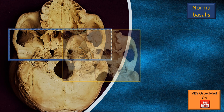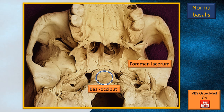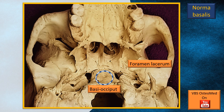Let's expand that view to get more clarity and identify more details. In this view, right at the middle, the dotted blue-white circle is the basi-occiput — the junction of the body of the sphenoid and the occipital bone, the basilar part of the occipital bone. We generally call it the basi-occiput. You can also see a small tubercle, the pharyngeal tubercle.